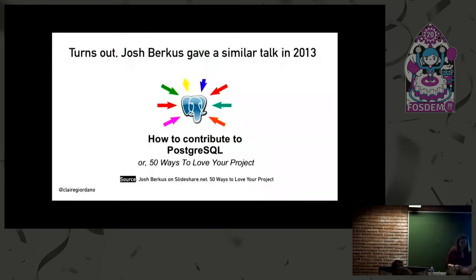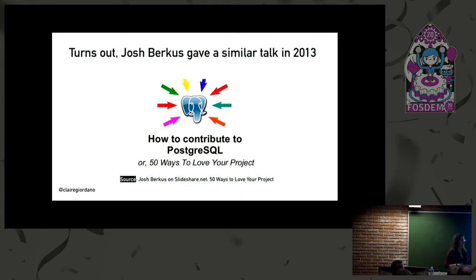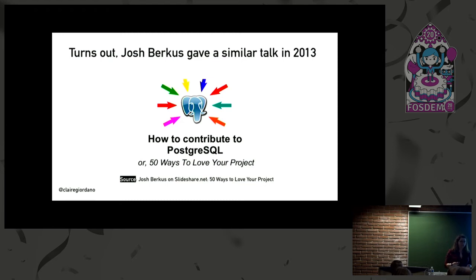When I was submitting my talk proposal for the CFP, I did a quick search at the very last minute — I had this paranoid thought: what if someone just did this? Sure enough, Josh Berkus delivered a talk back in 2013 called '50 Ways to Love Your Project.' He was on the core team for Postgres for many years, now he has emeritus status. I wanted to give him a shout out. It's been seven years, so it seemed time to have the conversation again and make more people aware of all the ways you can contribute to Postgres.